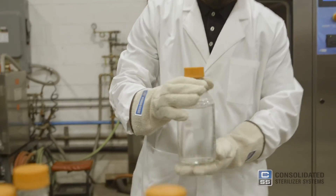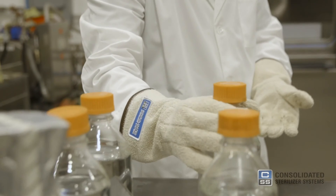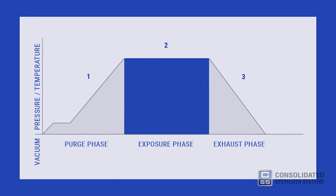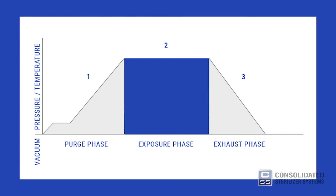There are three primary phases to any sterilization cycle. First, the purge phase, during which steam enters the sterilizer and displaces air. Second, the exposure phase, during which the autoclave achieves and maintains the desired temperature. And finally, the exhaust phase, during which pressure is released from the chamber and the chamber is restored to ambient pressure.